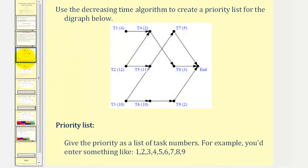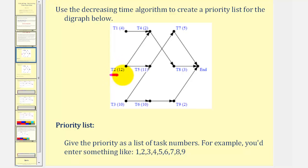We want to use the Decreasing Time Algorithm to create a priority list for the digraph below. Notice we have a total of nine tasks, and the time requirement for each task is in parentheses — let's assume they're hours. Notice task two takes the longest at 12 hours, and therefore task two is first on the priority list.